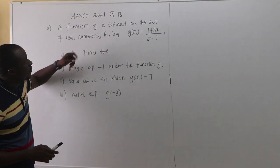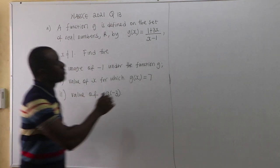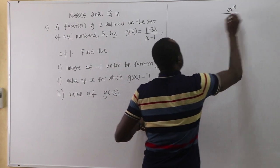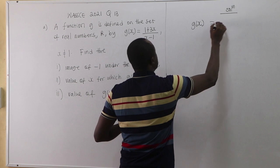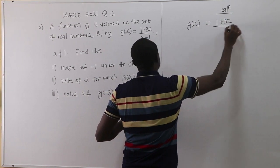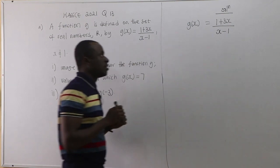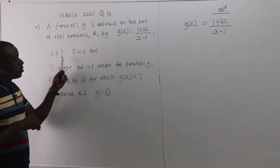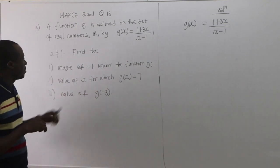A function G is defined on the set of real numbers R by: G(x) = (1 + 3x) / (x - 1), where x ≠ 1. When x is 1, this becomes undefined.